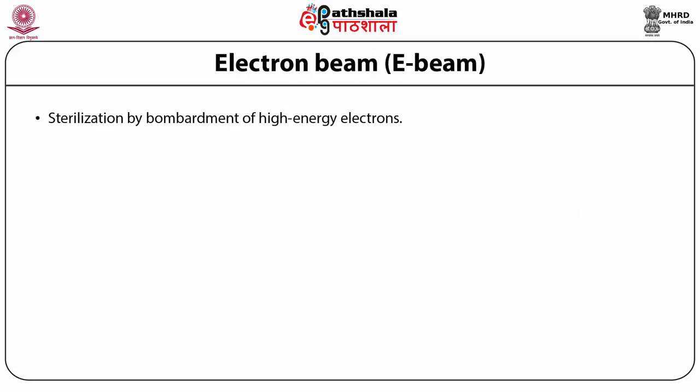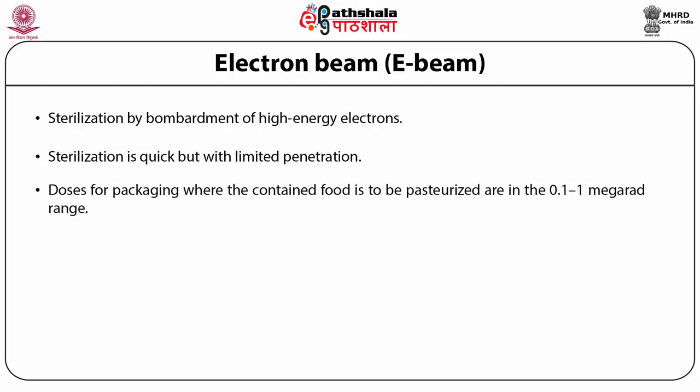Electron beam irradiation is a bombardment of high-energy electrons. Sterilization is quick but with limited penetration. Less is known about E-beam sterilization effects on the physical properties and color stability of thermoplastics compared with gamma sterilization. Doses for E-beam irradiation for sterilization of medical disposable items are in the 1 to 6 kGy range, and for packaging where the contained food is to be pasteurized, in the 0.1 to 1 kGy range.